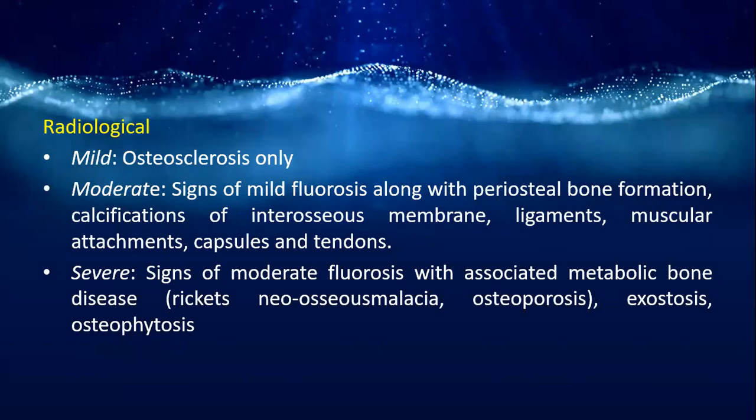Radiologically: mild shows osteosclerosis; moderate shows signs of mild fluorosis plus periosteal bone formation and calcification of interosseous membranes, ligaments, muscular attachments, and capsules; severe shows signs of moderate fluorosis associated with metabolic bone diseases like rickets, osteomalacia, osteoporosis, exostosis, and osteophytosis.